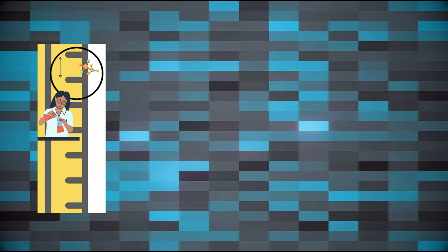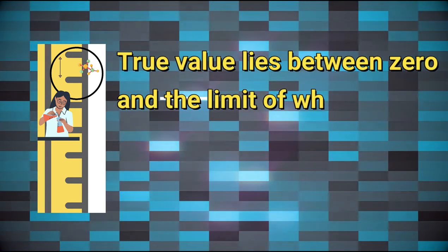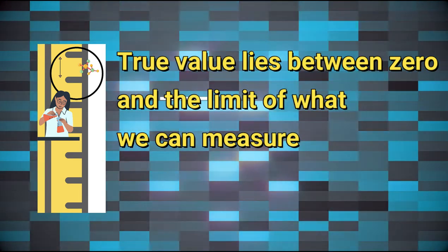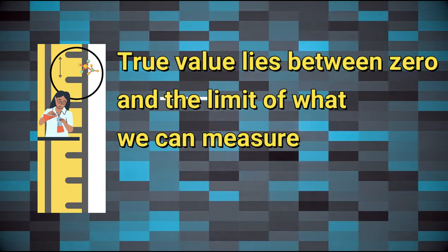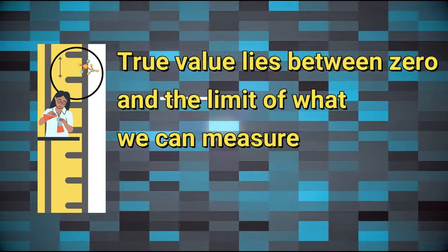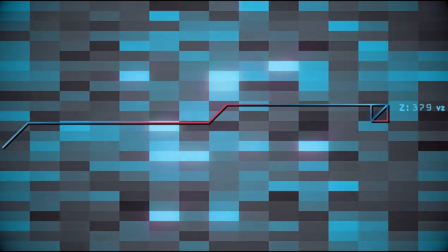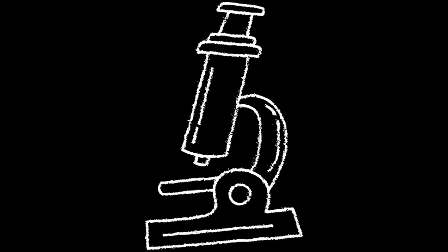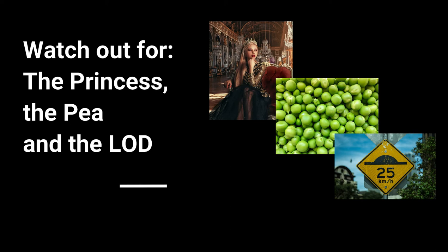This also applies in cases where what we are measuring is close to what we can detect. In such cases, we can only say that the true value lies between zero and the limit of what we can measure. If we are absolutely truthful, we can never say that what we are measuring is not present — we can only say it's less than the smallest thing we can detect. I will explain this in a future video in more detail.